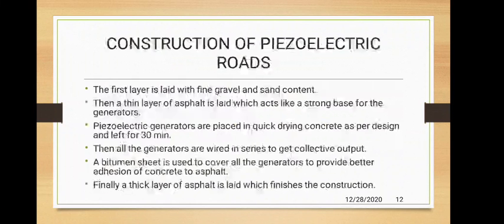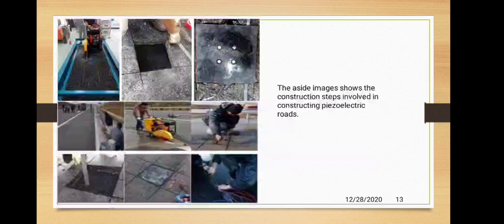Looking at the construction of piezoelectric roads, the construction changes slightly on the top surface. The first layer is laid with fine gravel and sand content, similar to general road construction. Then a thin layer of asphalt is laid which acts as a strong base for the generator and serves as a foundation point. Piezoelectric generators are then placed in quick-drying concrete as per the design and left for 30 minutes. In the left figure, you can see how a section of road is cut and a piezoelectric generator is placed over the asphalt section.